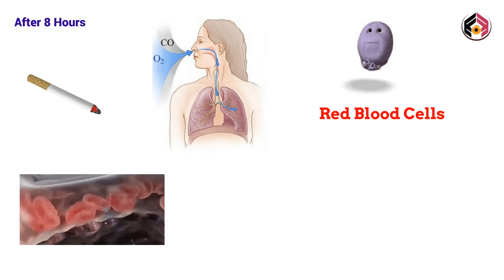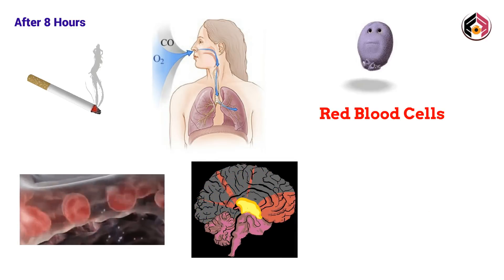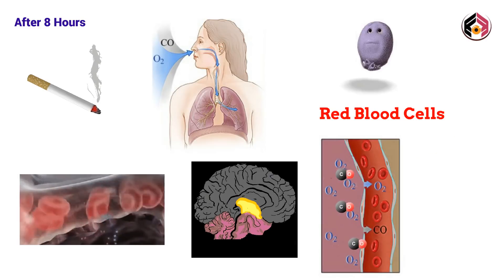That causes problems from your muscles to your brain because they don't get the oxygen they need. In just eight hours after quitting smoking, nicotine and carbon monoxide levels in the blood begin to decrease, and blood oxygen levels will have increased to normal.